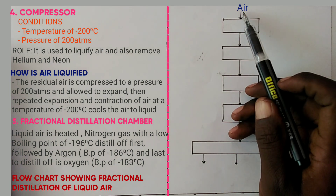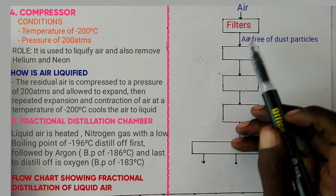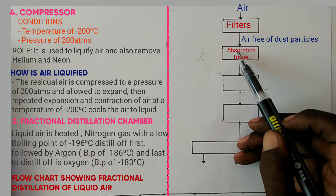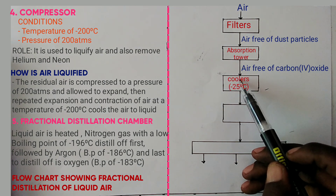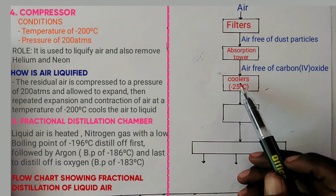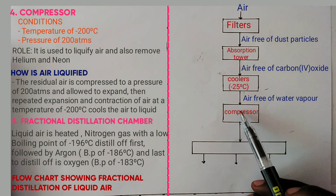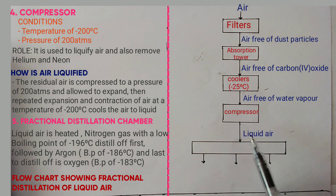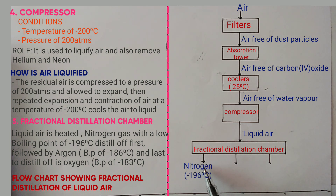The flowchart for the industrial manufacture of oxygen shows: air enters the filters to remove dust particles, then the absorption tower containing sodium hydroxide removes carbon dioxide, then the cooler at negative 25°C removes water vapour as ice. Air free of water enters the compressor at negative 200°C and 200 atm, where helium and neon are removed and air is liquefied. The liquid air enters the fractional distillation chamber: nitrogen distils off first at negative 196°C, followed by argon at negative 186°C, and finally oxygen.